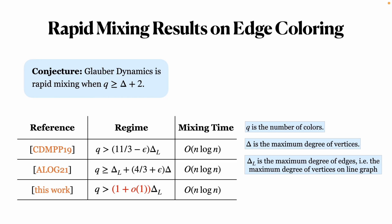Delta denotes the maximum degree of vertices, and we define delta L as the maximum degree of edges, which corresponds to the maximum degree of vertices on the line graph. CDMPP tells us that when q exceeds 11/3 delta L, the mixing time is O(n log n), and ALOG21 refined the required extra color to 4/3 delta.